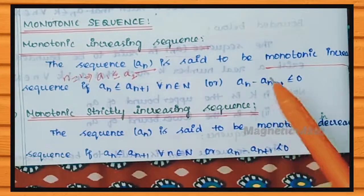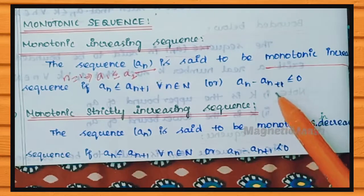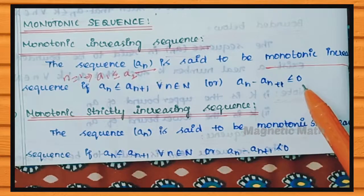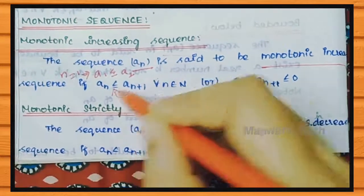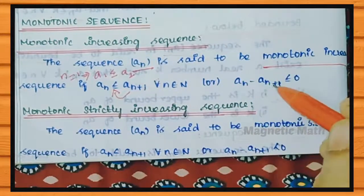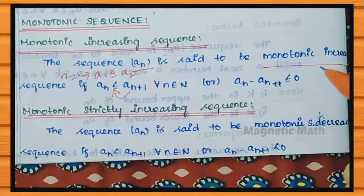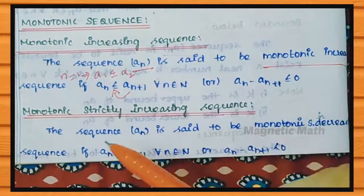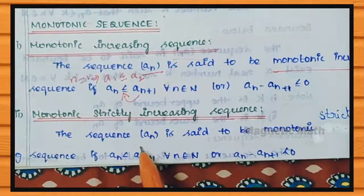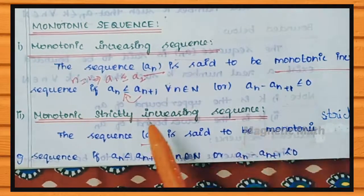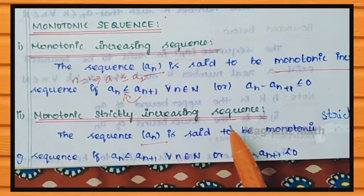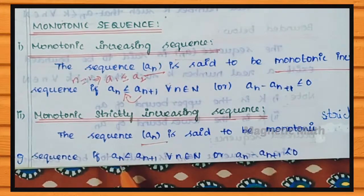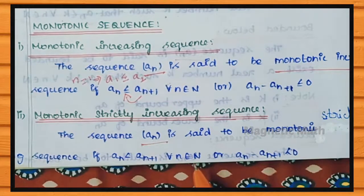We also know that An minus An plus 1 is less than or equal to 0. For Strictly Increasing: An is less than An plus 1, for all n belonging to the natural numbers, meaning A1 is less than A2.